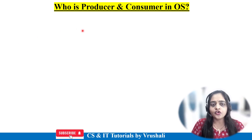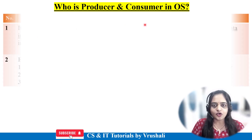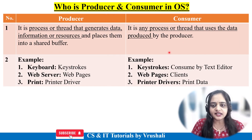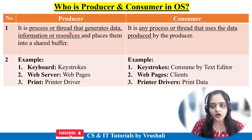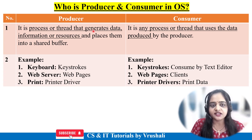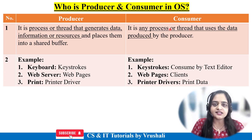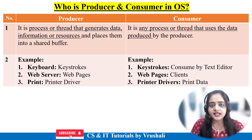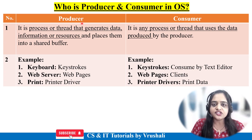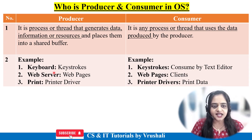Let's understand first who is the producer and consumer in operating system. See here in this particular table. The first one is a producer — a producer is a kind of process or thread that generates data or produces information. On the other side there is the consumer. A consumer is also a process or thread that consumes or uses the data that was generated by the producer. Now let's understand with an example.